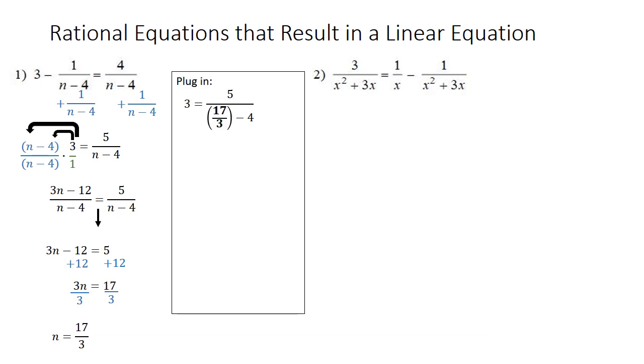I'm using the equation from our second step, the 3 equals 5 over n minus 4, just because it's a little easier to simplify. So I'm going to plug 17 over 3 in for n. So I have 3 equals 5 over 17 thirds minus 4.